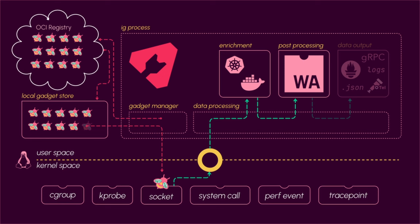Then we pass that on to the data output element. If you're running on the CLI in an interactive process, it might be tabular information or JSON format. If you want to send this to an API, you can use gRPC. But you can also send this to Prometheus or even logs.